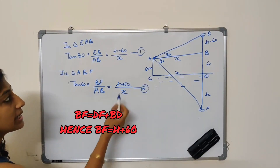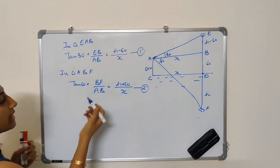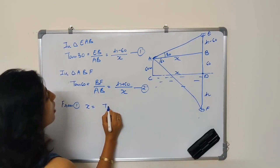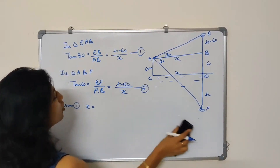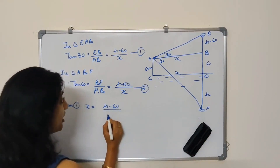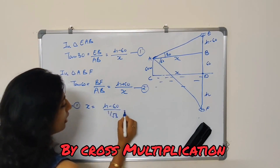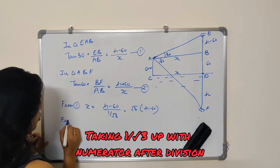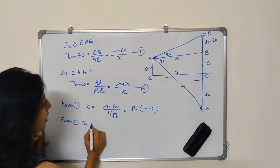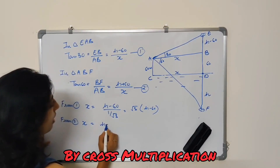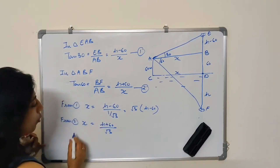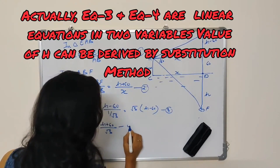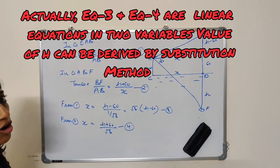What we are observing? We have X in both equation 1 and equation 2. Let us get X from equation 1: X is equal to H minus 60 upon tangent 30, which is nothing but 1 by root 3, so X equals root 3 into H minus 60. From equation 2, X is equal to H plus 60 upon root 3. So obviously both values of X will be equal, and I can equate these two values from equations 3 and 4 to find the value of H.